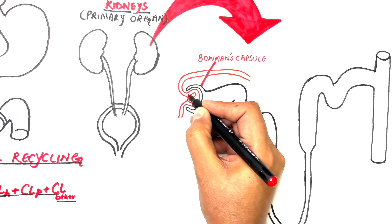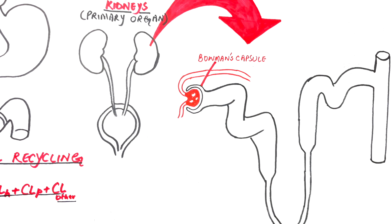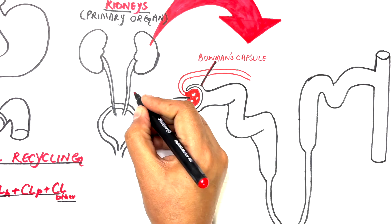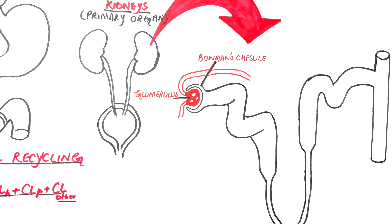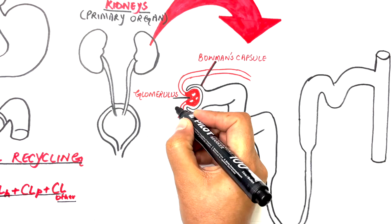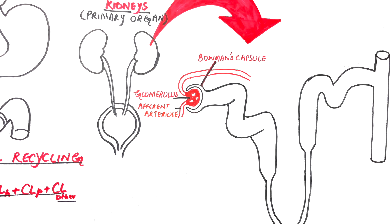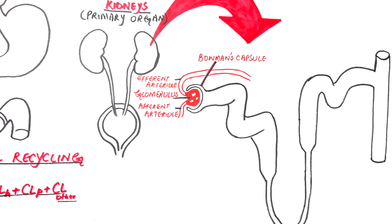Bowman's capsule forms a cup-like sac surrounding the glomerulus, which is the filtering unit of the kidney and is a specialized bundle of capillaries that are situated between two resistance vessels, the afferent and the efferent arterioles.